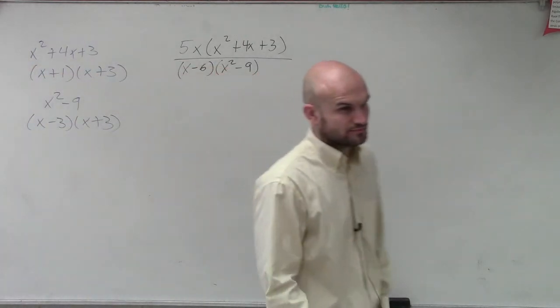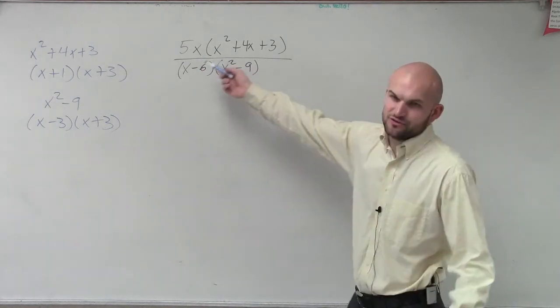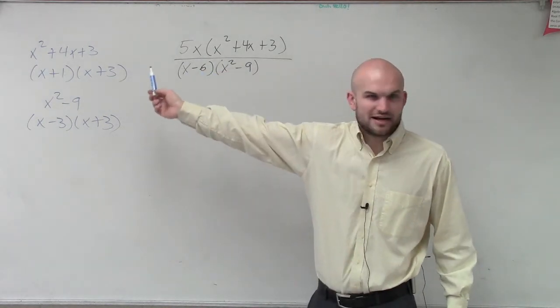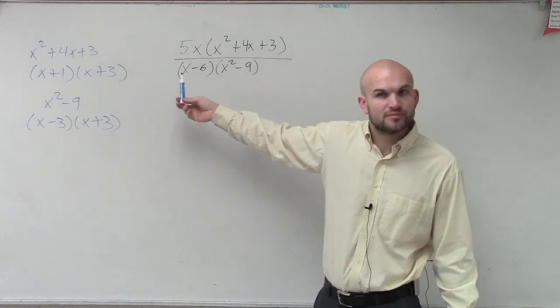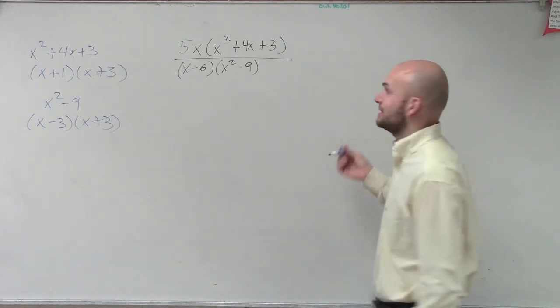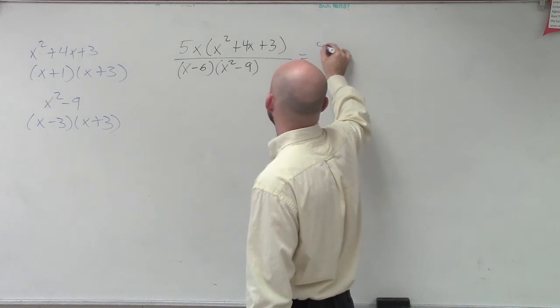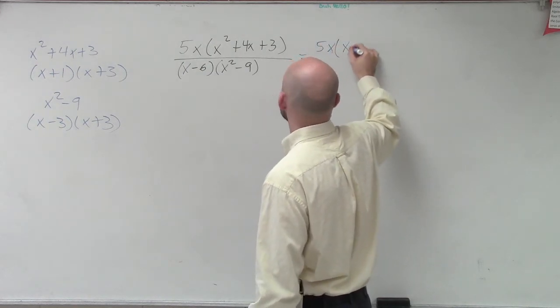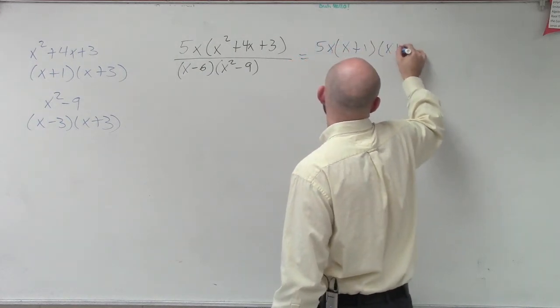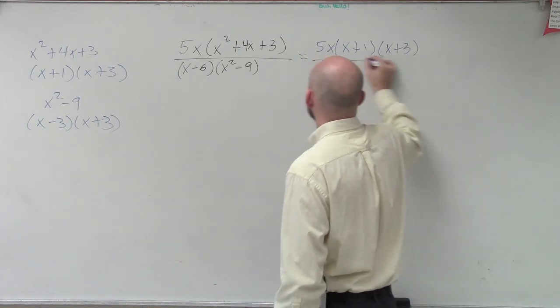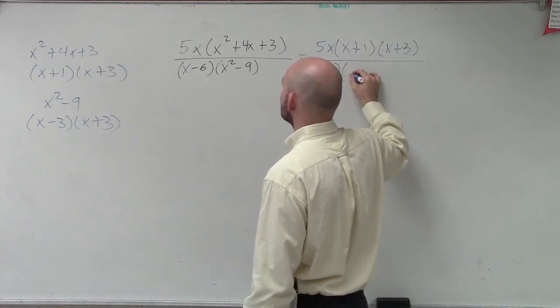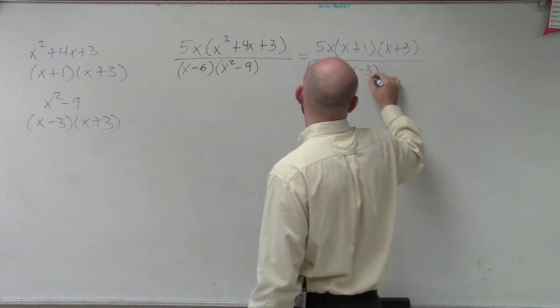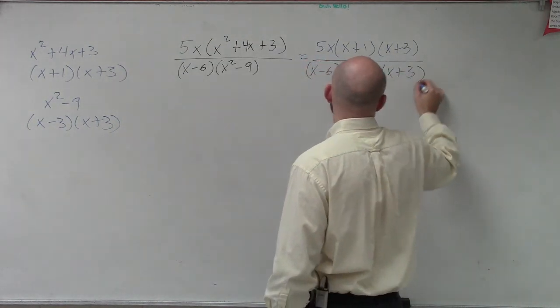Does everybody agree? Can I factor 5x into a different factored form? It's already factored. Can I factor x minus 6 any further? No. So now I'm just going to rewrite it in its factored form. So I have 5x times x plus 1 times x plus 3 divided by x minus 6 times x minus 3 times x plus 3.